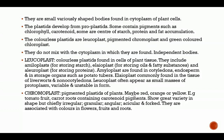Chromoplasts are pigmented plastids of plants. They may be red, orange, or yellow — for example, tomato fruit and carrot roots contain carotenoid pigments which are chromoplasts. They give flowers their coloration — what makes a flower look red, pink, orange, or any other color is due to the chromoplasts.